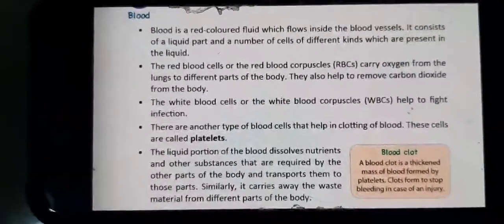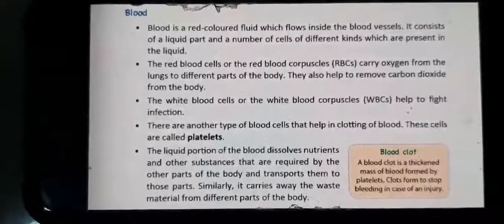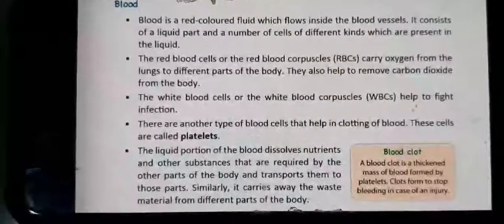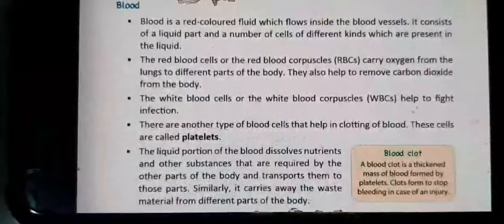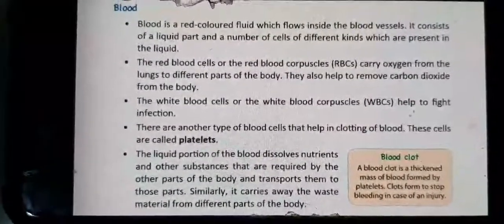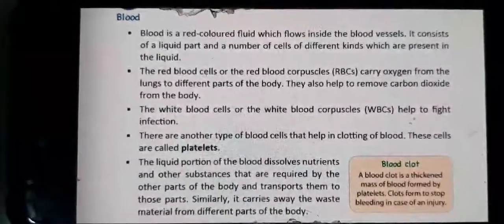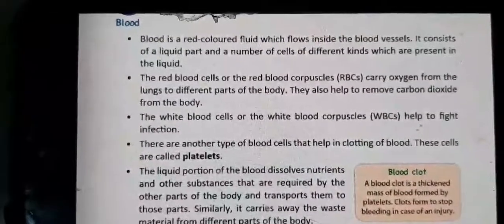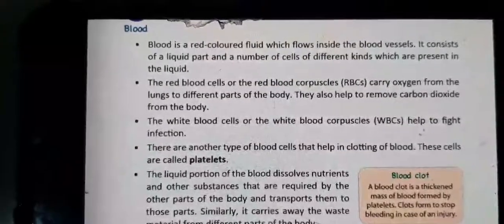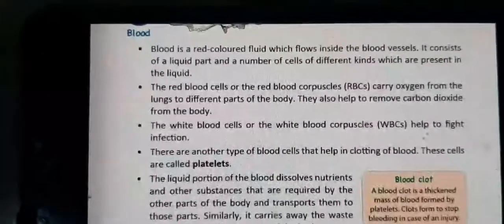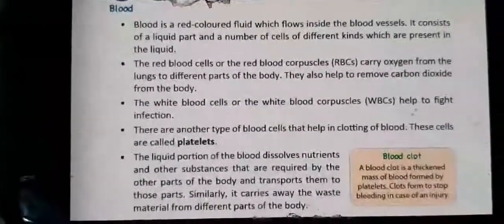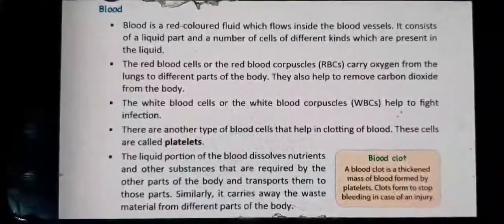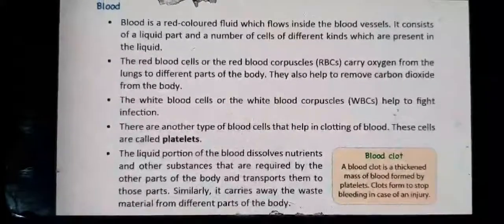The red blood cells, or RBC, carry oxygen from the lungs to different parts of the body. They also help to remove carbon dioxide from the body. White blood cells, or WBC, help to protect us from infection — they fight infection. There are another type of blood cells that help in clotting of blood, called platelets.